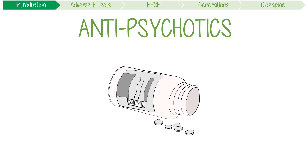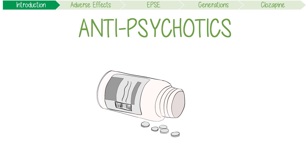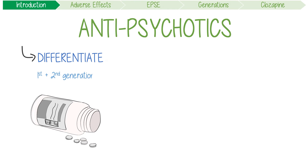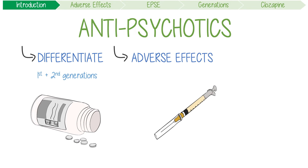Antipsychotics have a number of core adverse effects which are frequently examined. This video will use some powerful high-yield mnemonics to differentiate first and second generation drugs, structure their adverse effects, and give you a way to recall extrapyramidal complications.